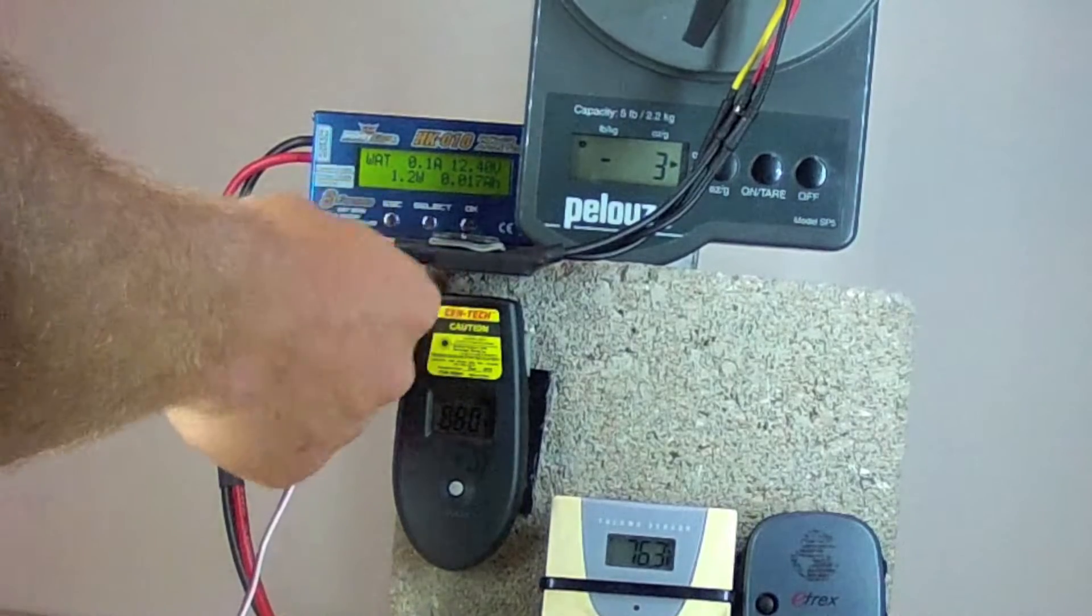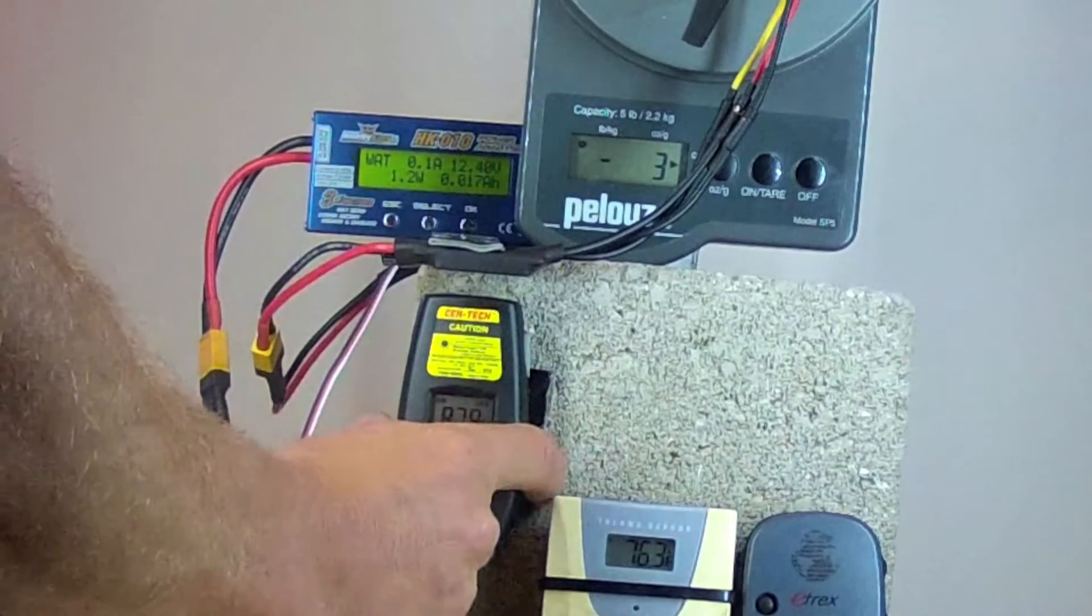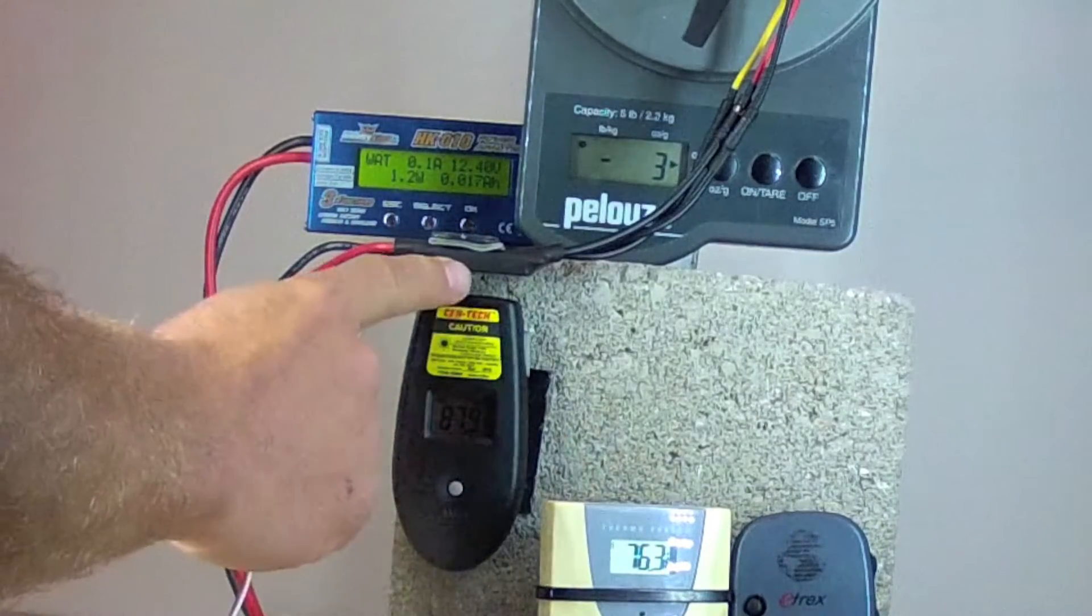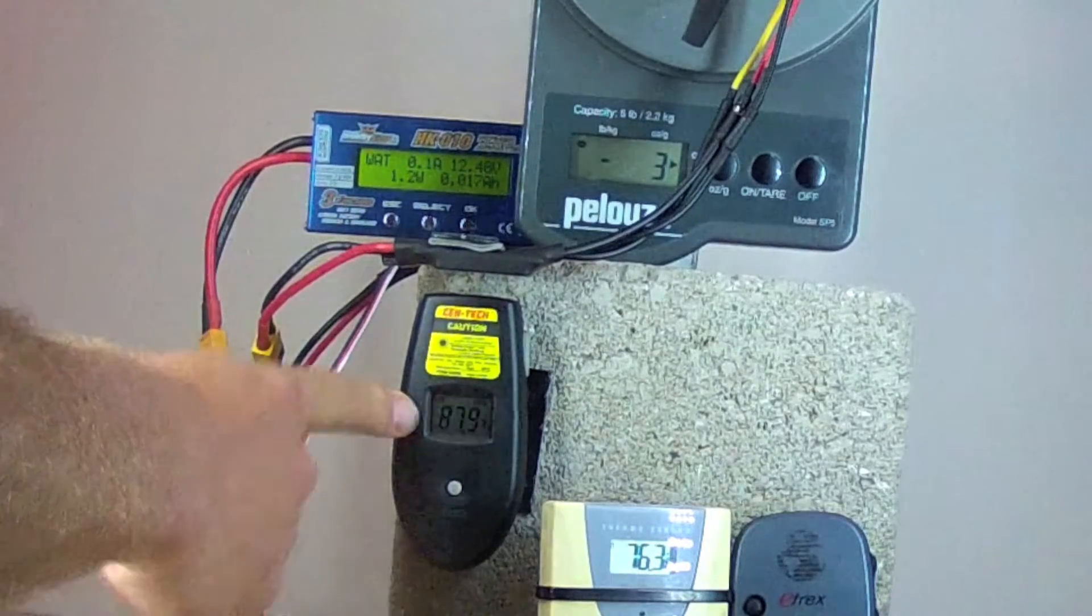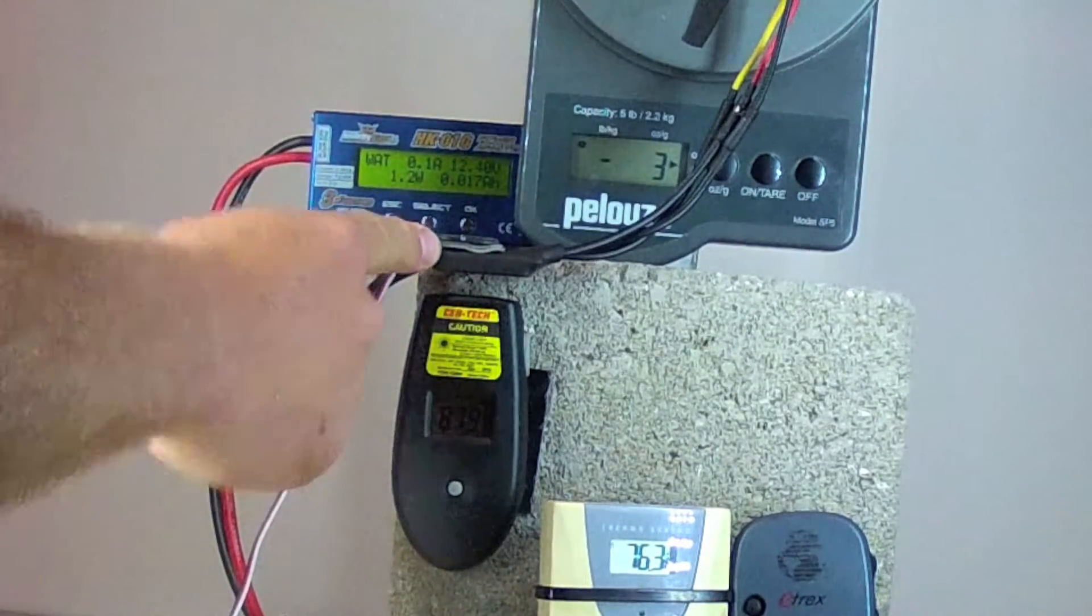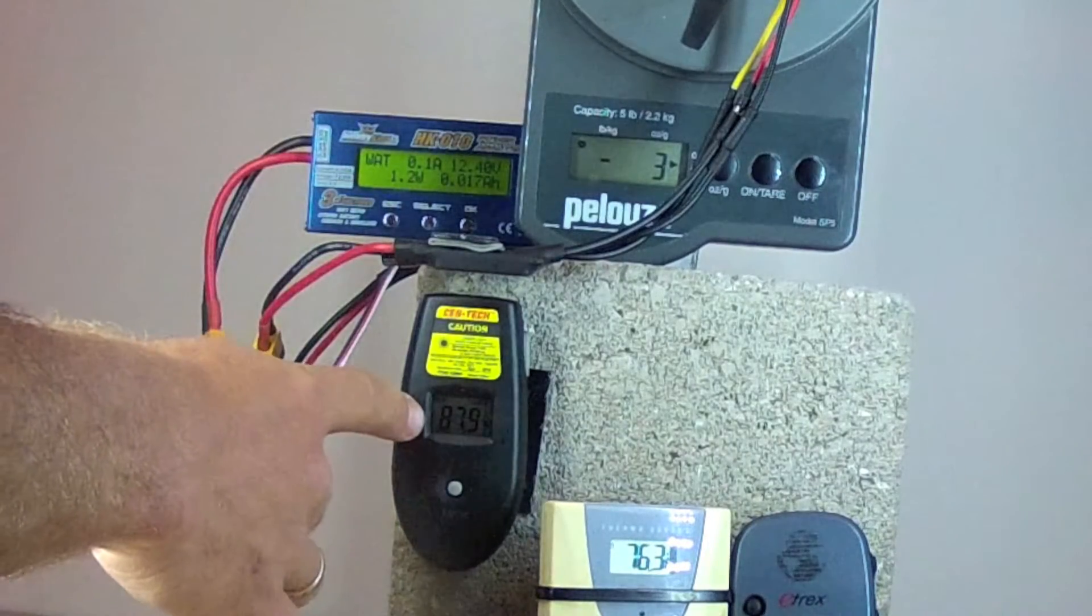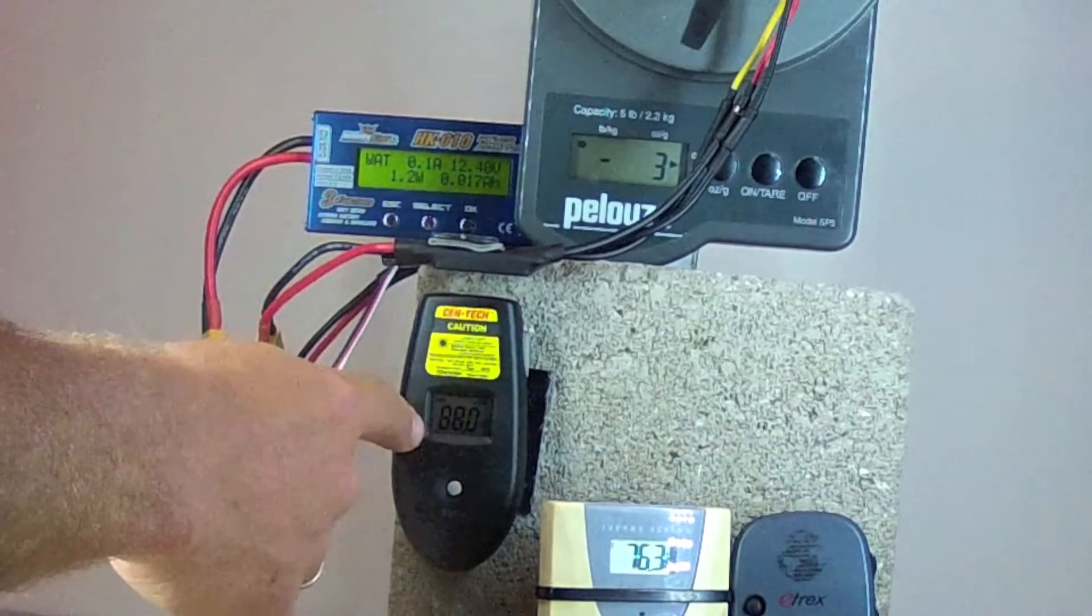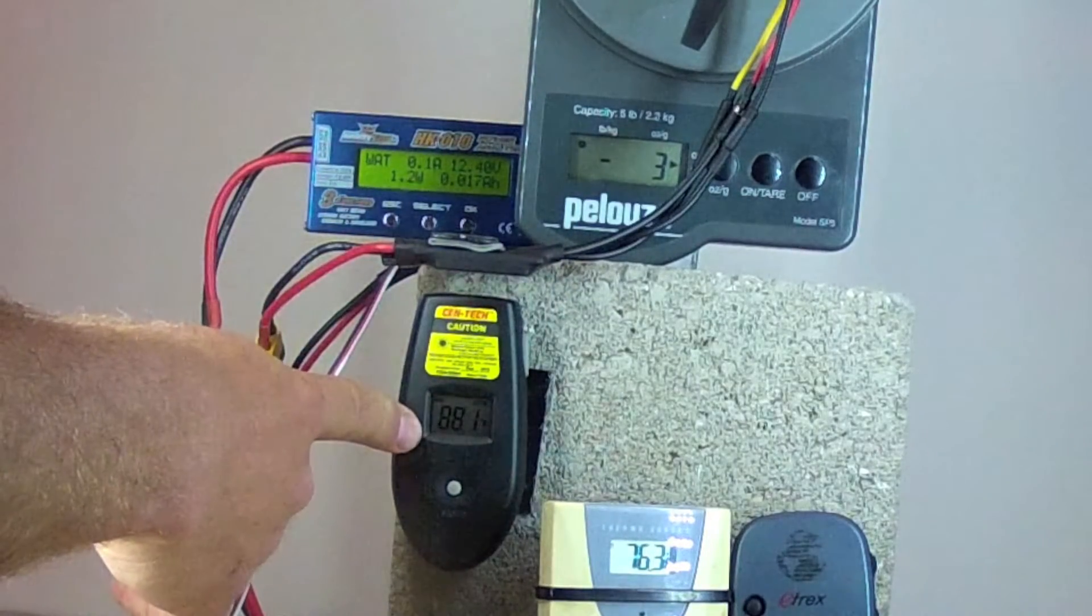The ESC is mounted here. This one is a Turnigy Hexvet 25 amp and this is an infrared thermometer pointed directly at the heat sink of the ESC just to measure the surface temperature of the ESC. Notice the ESC is mounted out of the airflow and out of the prop wash so it will tend to heat up pretty quickly. There's no real scientific basis for comparison for the temperature. I just want to monitor it and if there's any obvious problems from overheating I want to be able to detect that early.